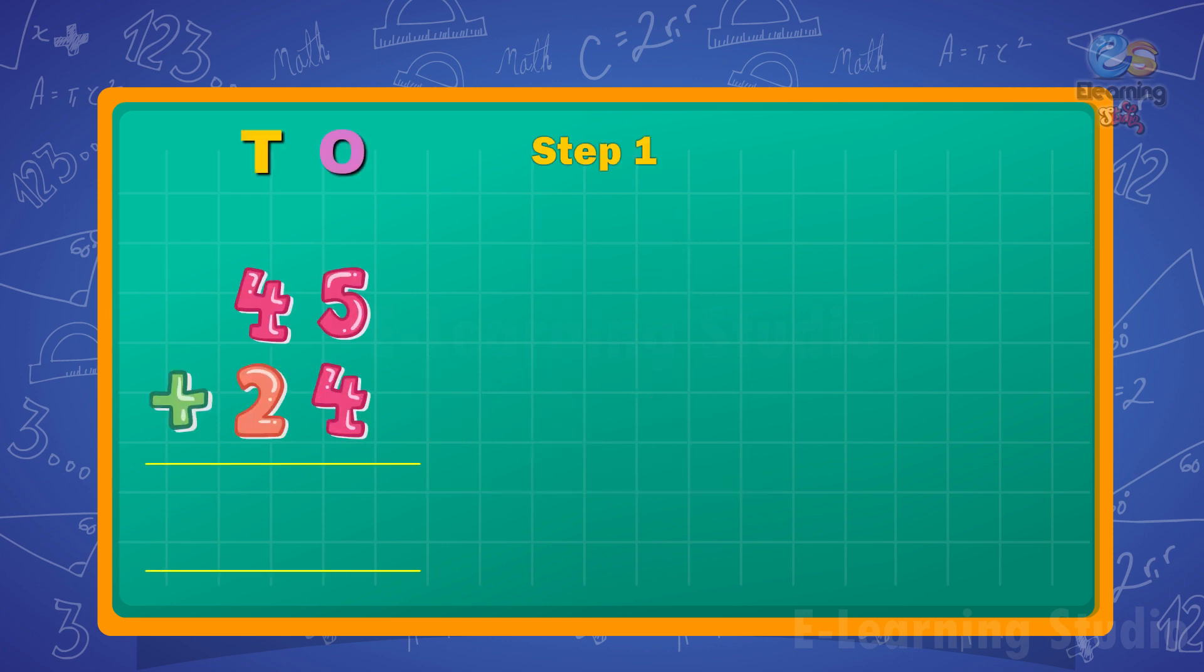add the ones. 5 plus 4 equals 9. Write 9 under the ones column. Step 2: Next,